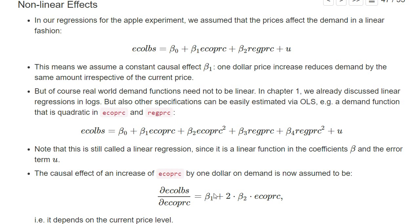In this quadratic specification, the causal effect of a price increase on demand depends on the actual price. If I take the derivative of this demand function with respect to the ecological price, I find it's β1 plus 2 times β2 times the ecological price. This means we would assume that if we have a higher price of ecological apples, a price increase may have a different effect than if we have a lower price — whether larger or smaller depends on the relative signs of β1 and β2.